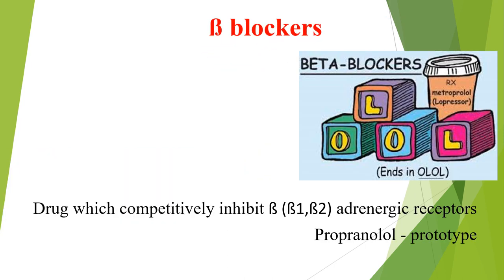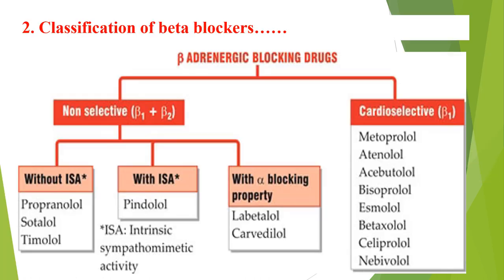Beta blockers competitively inhibit beta-1 as well as beta-2 adrenergic receptors. The prototype drug is propranolol. The classification of beta-adrenergic blocking agents includes two main groups: non-selective drugs, which block both beta-1 and beta-2 receptors, and cardioselective drugs.